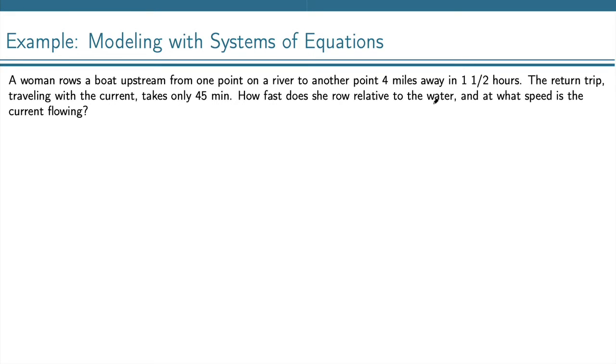One is that when she's rowing against the speed of the current, she's going a certain speed because it takes her an hour and a half. And the second relationship is that traveling with the current takes only 45 minutes.